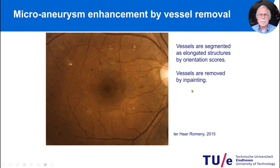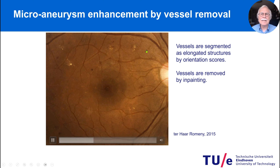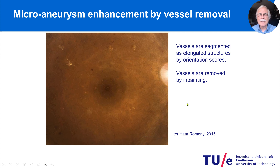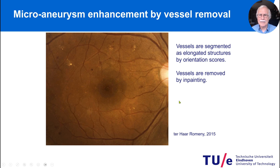If you have blood vessels, it's difficult to look behind them. But we have a technique called in-painting where you can remove the blood vessels. The vessels are not filled in with blank space but with the texture behind them. It turns out that finding these textural patterns and microaneurysms is much easier with the vessels removed. So we could do this very nicely with this in-painting technique.